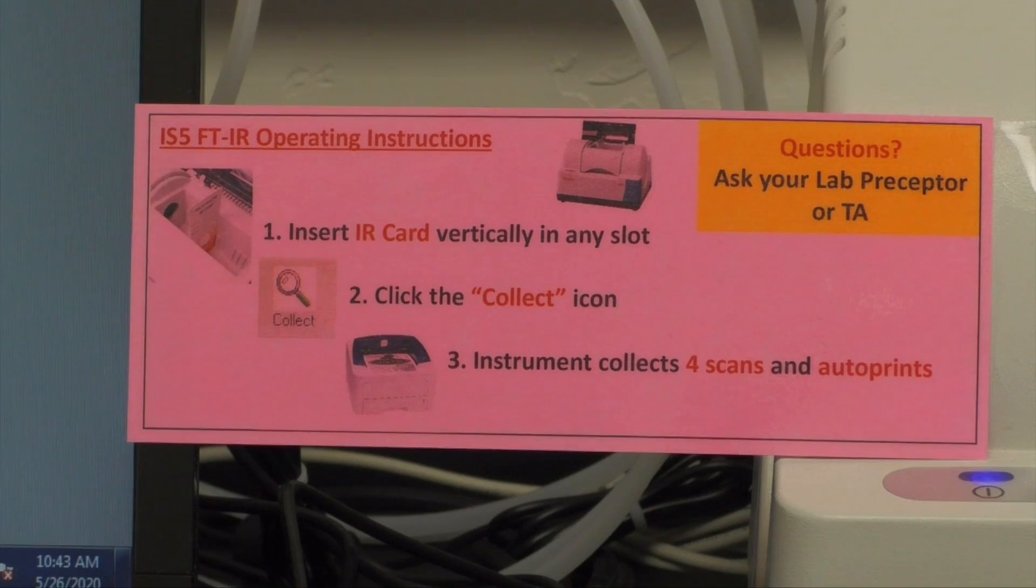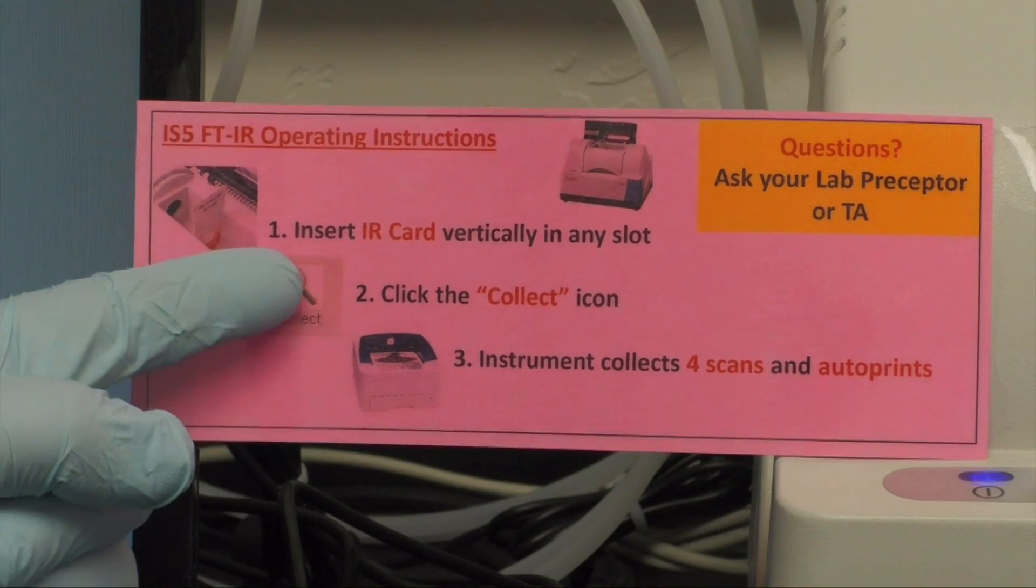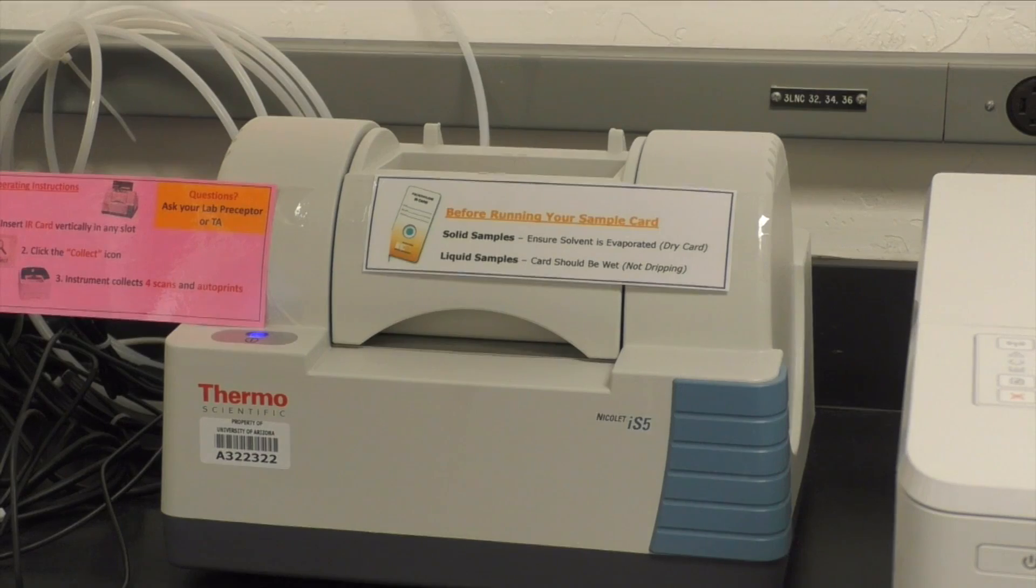Running your sample is an easy three-step process. Take your IR card to the instrument room. First, place your card vertically in any of the instrument slots.